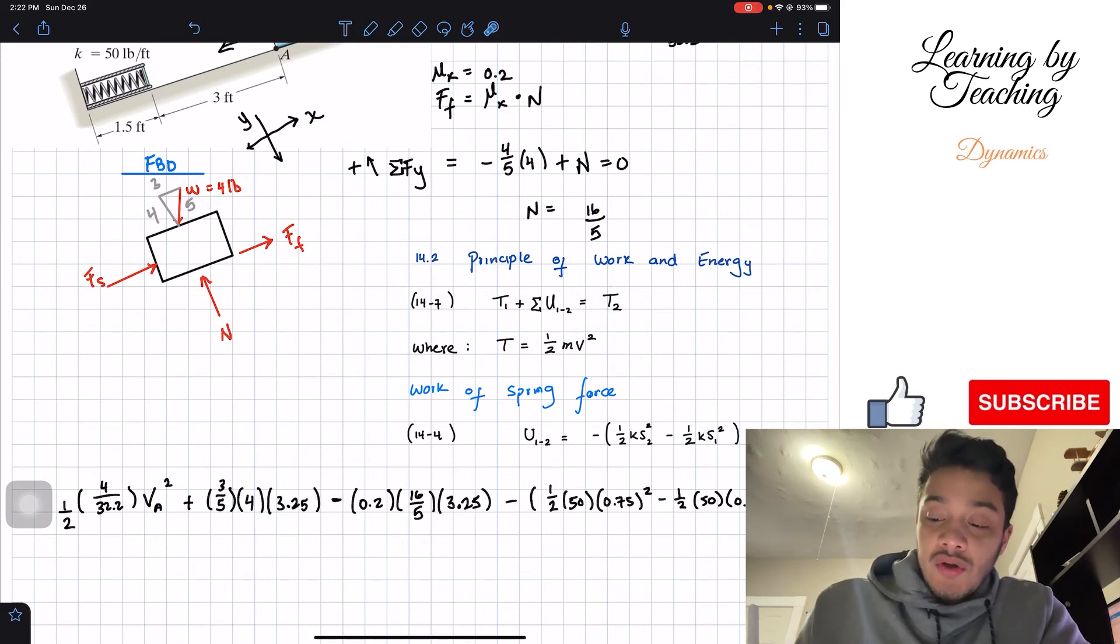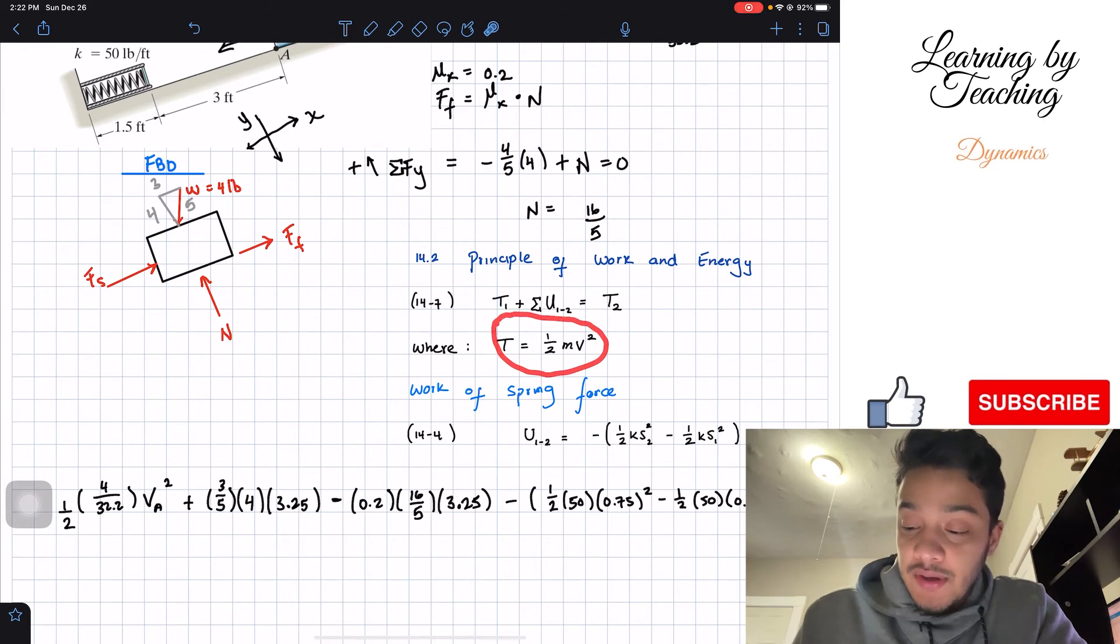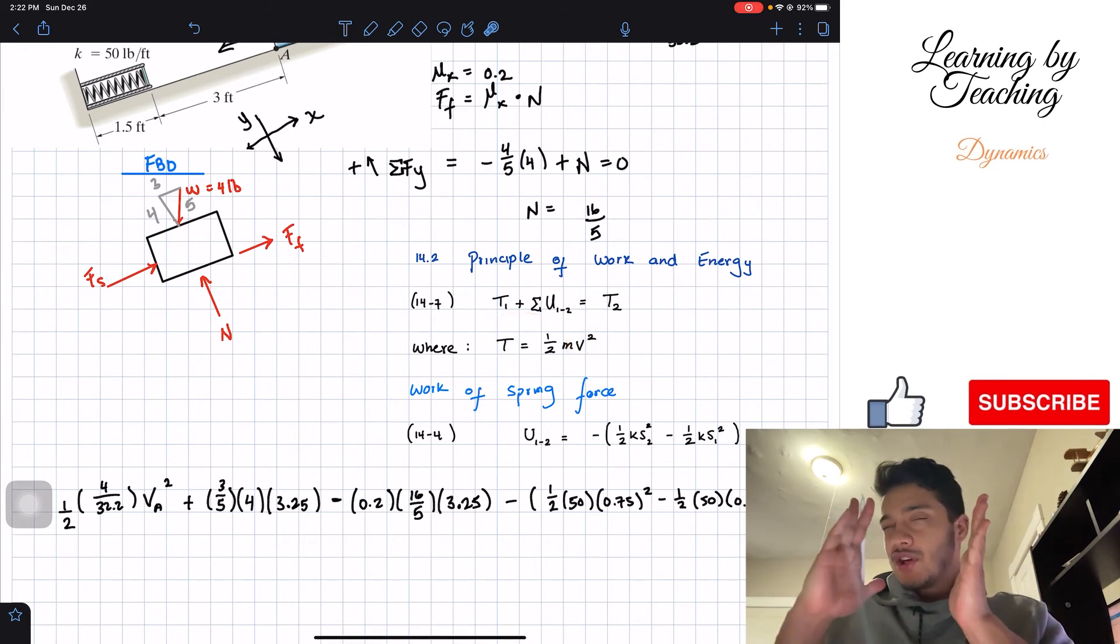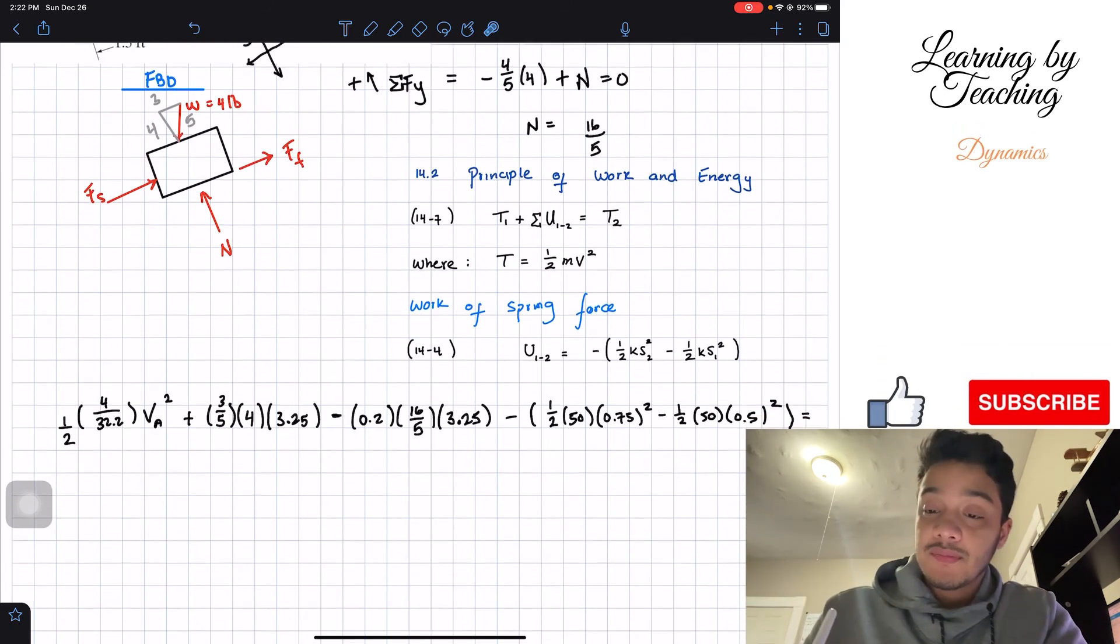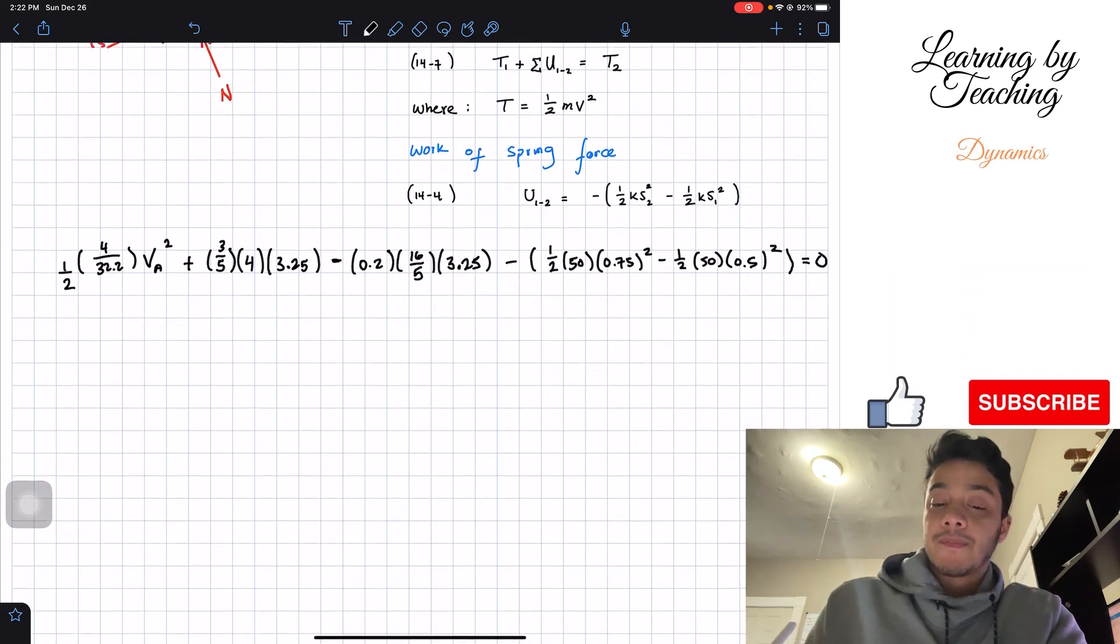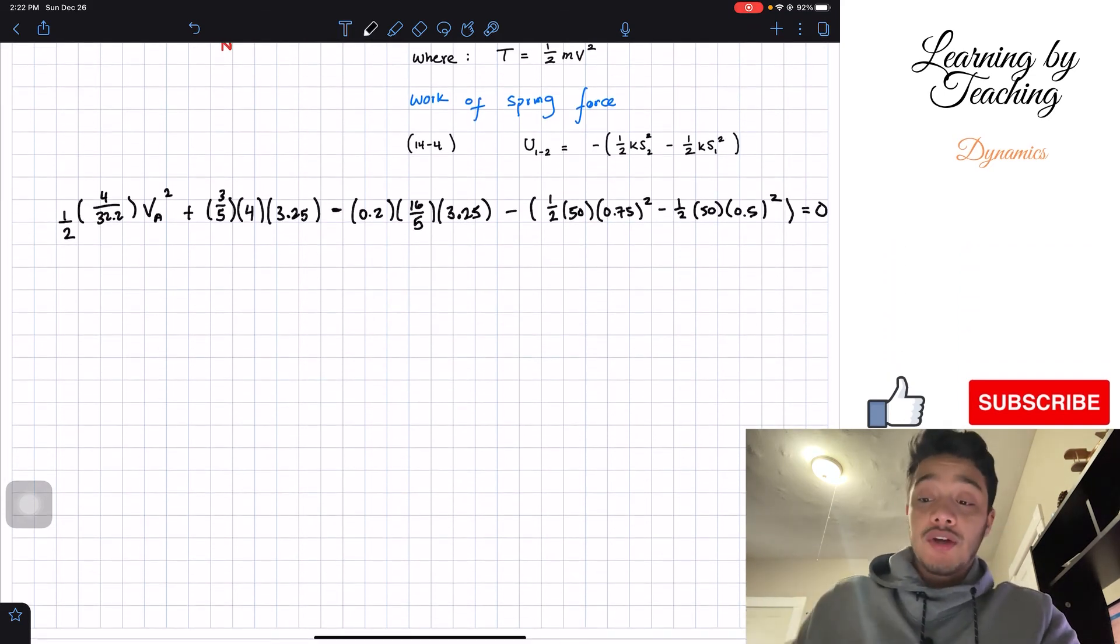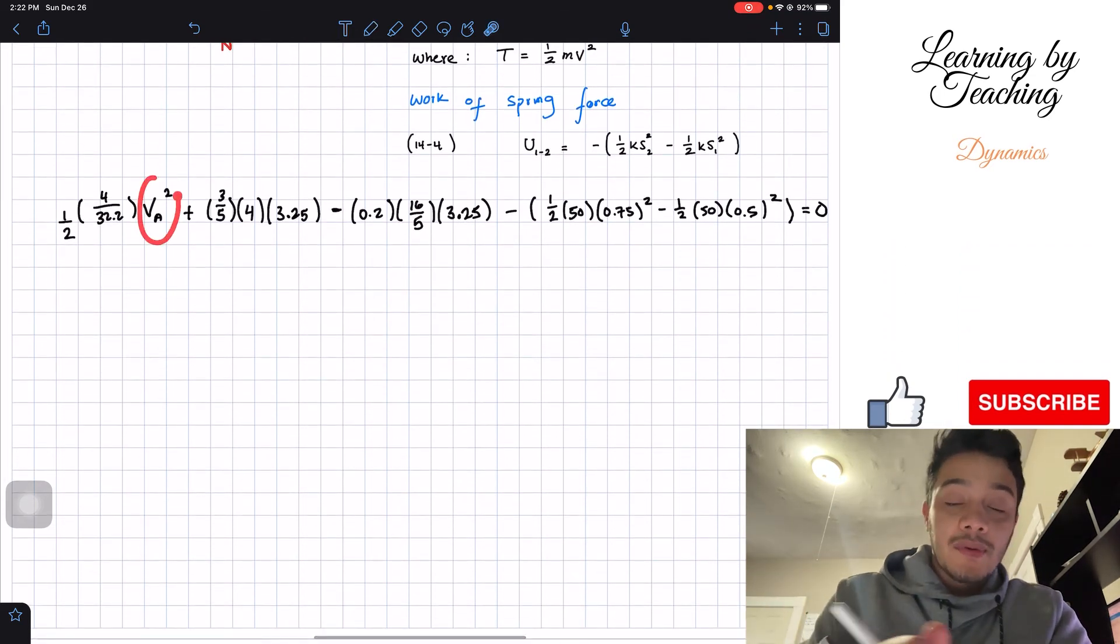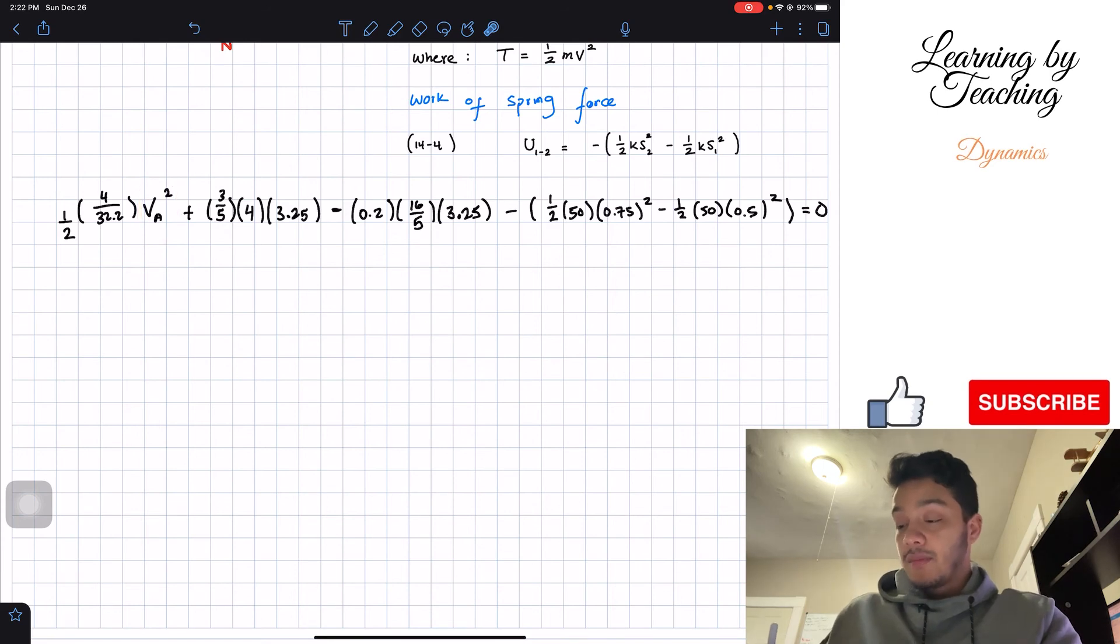Alright. So however, in T2, the good thing about this problem is that T2 happens when the velocity specifically is equal to 0, meaning that it's just before it stops. So this velocity is equal to 0. My entire T2 is going to be equal to 0. So now we have this big equation with only one unknown, which is our velocity. And that's good because that's the one that we want. So let's simplify this problem.